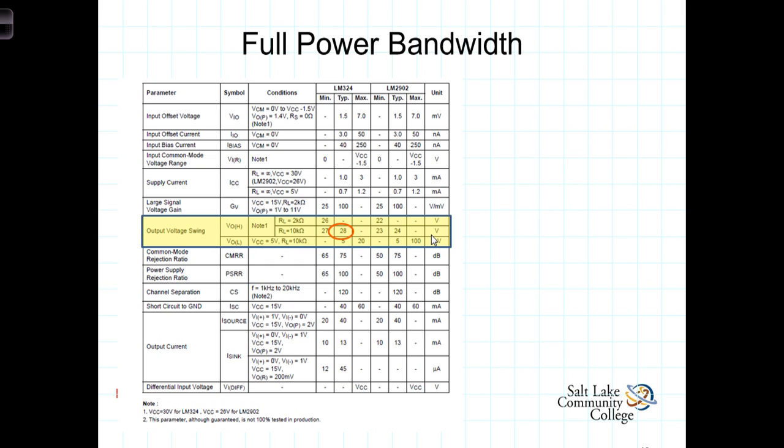The full power bandwidth is defined as the highest frequency that a sine wave can have whose amplitude is at the maximum rated output of the op amp without slew rate distortion occurring.